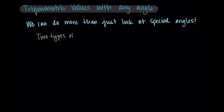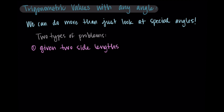To give us some framing, I'm going to highlight two different types of problems that involve finding trig values with other angles. These are the most common types we see in a precalculus or trig course. The first is that we're trying to find trig values and we're given two side lengths and the quadrant that the triangle or the angle is in.